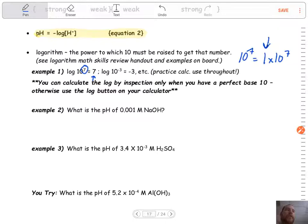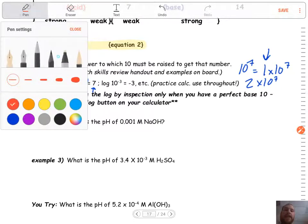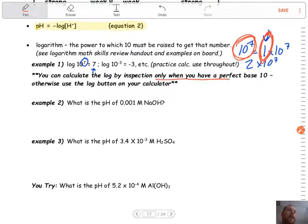If there's a one out in front of your number, your concentration, the log is just going to be that exponent number. If you have a number like something else out there, like 2×10^7, that's where it's different. Only if you have a one out in front of your concentration or if it's written with just 10 to the power will that number up there be your number. We can calculate by inspection only when we have a perfect base 10, which is that one out in front. Otherwise, we're going to use our log button.